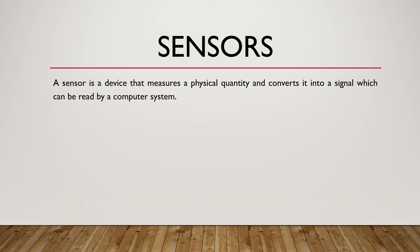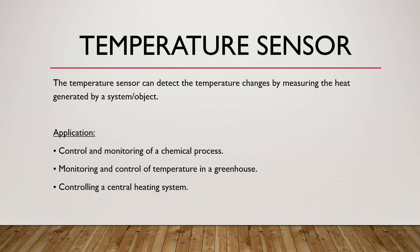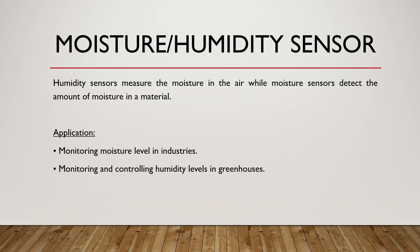Sensor. A sensor is a device that measures a physical quantity and converts it into a signal which can be read by a computer system. Temperature sensor: detects temperature changes by measuring the heat generated by a system or object. Used for controlling chemical processes, monitoring temperature in a greenhouse, and controlling a central heating system. Moisture or humidity sensor: humidity sensors measure the moisture in the air, while moisture sensors detect the amount of moisture in a material. Used for monitoring moisture levels in industries and controlling humidity levels in greenhouses.